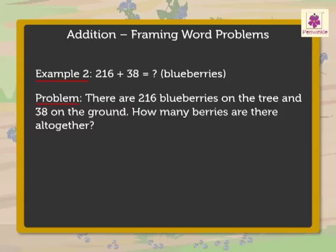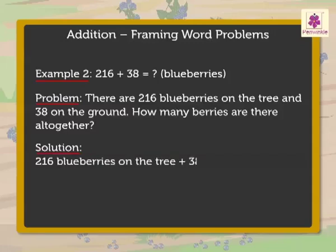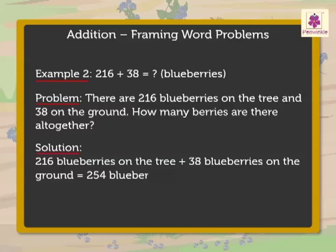Here, the word 'all together' has been used to show addition. Thus, 216 blueberries on the tree plus 38 blueberries on the ground is equal to 254 blueberries.